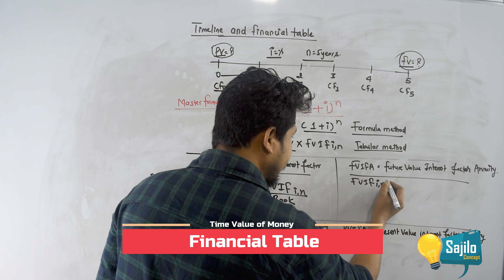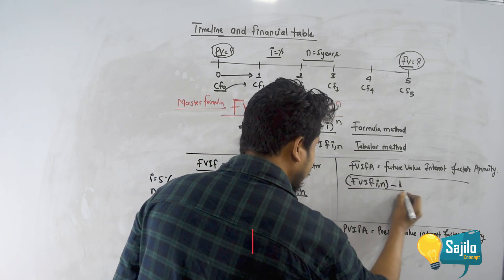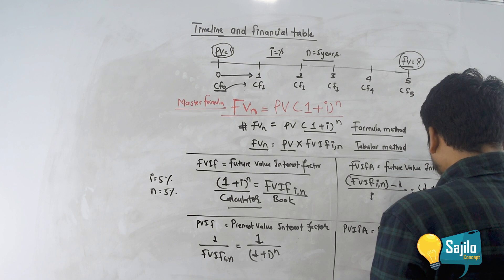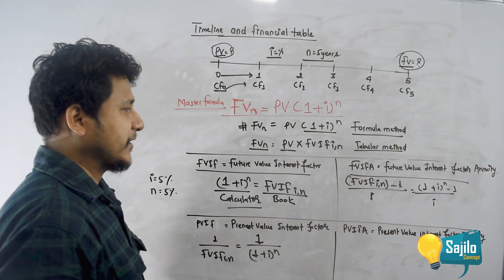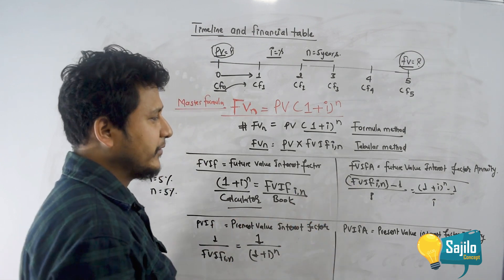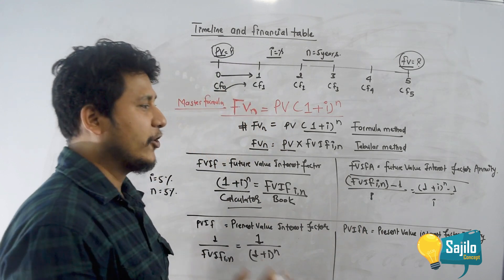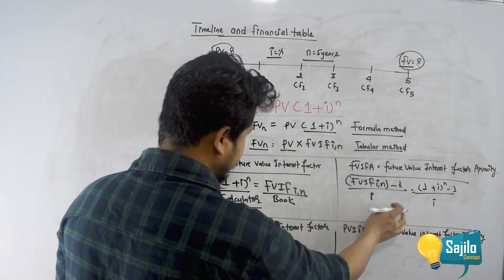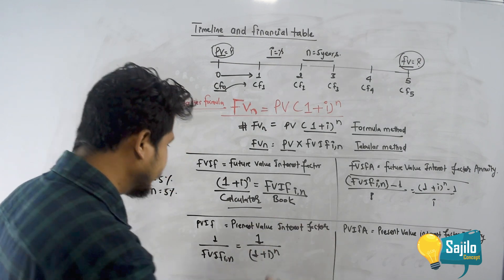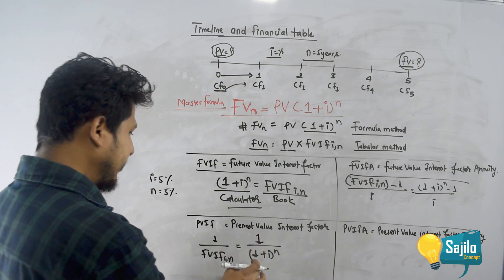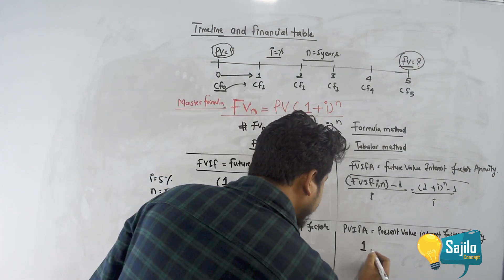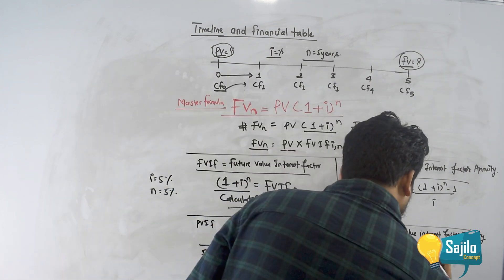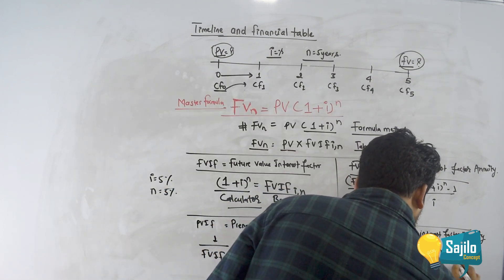For the future value interest factor of an annuity: (1 + i)^n minus 1, divided by i. For the present value interest factor of an annuity: 1 minus 1/(1 + i)^n, divided by i. These are the key annuity formulas used with the financial table.